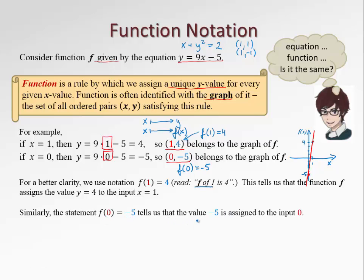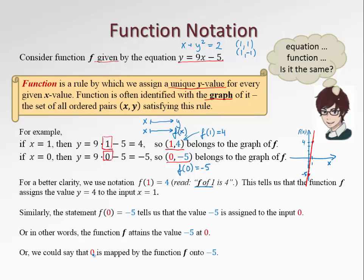So we are saying that the function f assigns the value y equals 4 to the input x equals 1. Similarly, this statement tells us that the value negative 5 is assigned to the input 0. We can restate this in other words. We can say that function f attains or assumes the value negative 5 at 0. We could also say that 0 is mapped, in other words, is mapped by the function f onto negative 5. For example, imagine that this is a set of all input points. Particularly, this point is 0. And that is a set of all the output points. Particularly, let this point be negative 5. Then the function f is mapping the 0 onto negative 5.